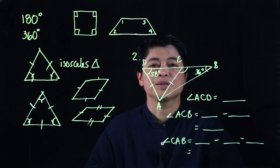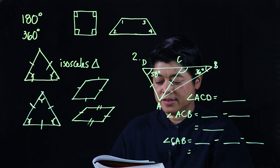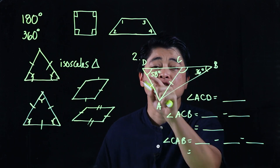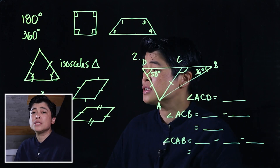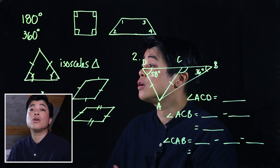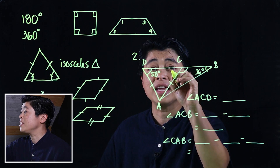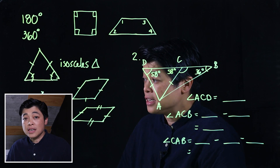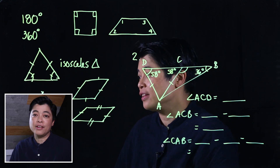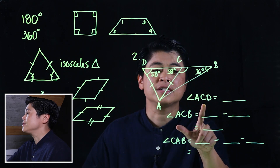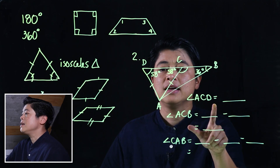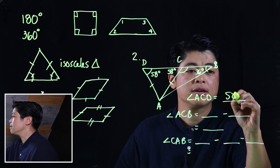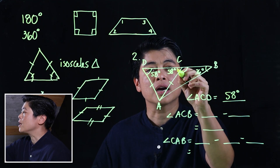Looking at this figure, we have two sets of triangles. One is an isosceles triangle, so since we know the given angle is 58 degrees, the equal base angles are also 58 degrees — we write that down so it's easier to recognize. The first question asks for angle ACD, which we just wrote down: that's 58 degrees.